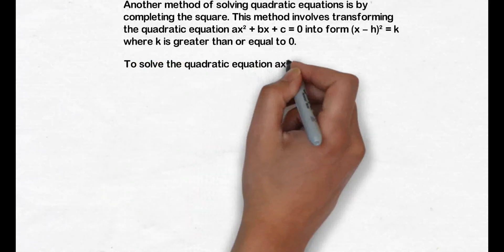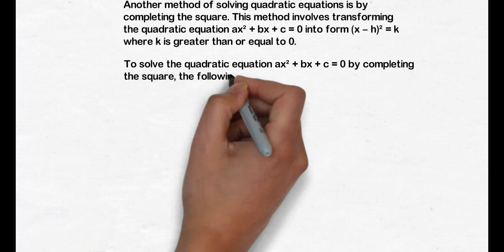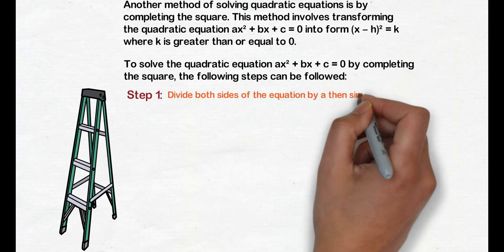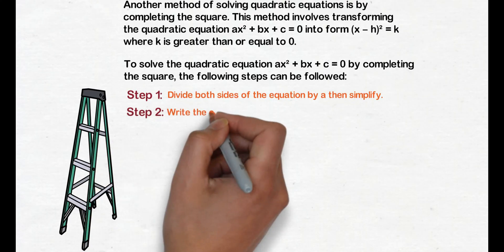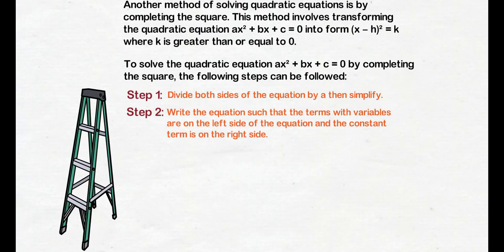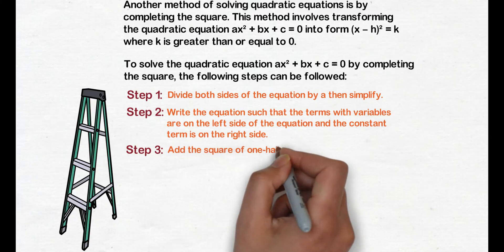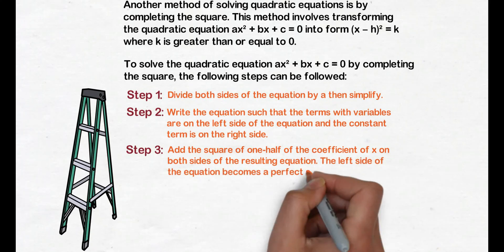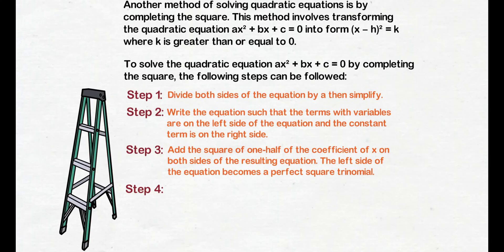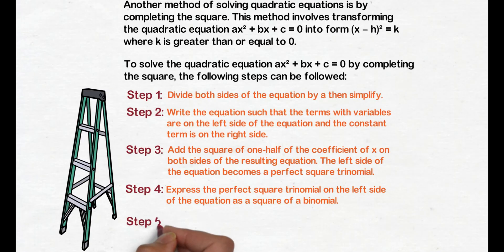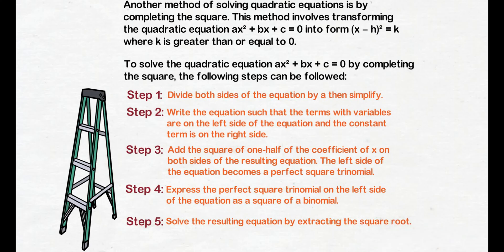To solve the quadratic equation ax square plus bx plus c equals 0 by completing the square, the following steps can be followed. Step 1: divide both sides of the equation by a, then simplify. Step 2: write the equation such that the terms with variables are on the left side and the constant term is on the right side. Step 3: add the square of one half of the coefficient of x on both sides. The left side becomes a perfect square trinomial. Step 4: express the perfect square trinomial as a square of a binomial. Step 5: solve the resulting equation by extracting the square root. Step 6: solve the resulting linear equations.